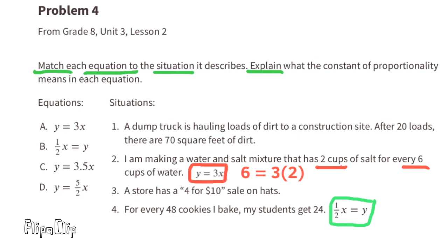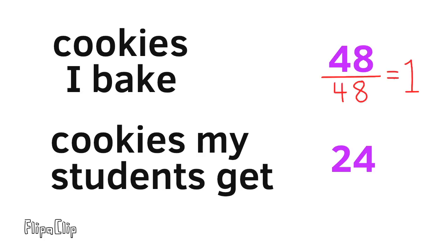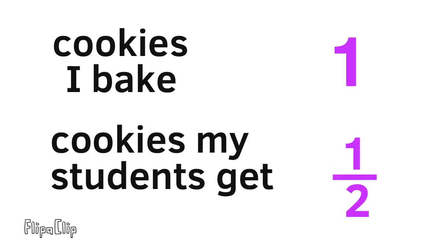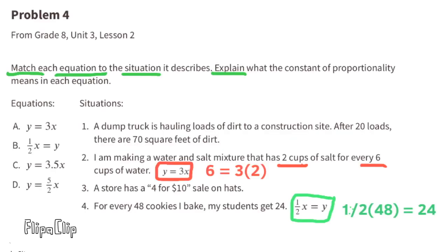Equation B matches situation 4: for every 48 cookies baked, students get 24. When 48 cookies are baked and students get 24, dividing 24 by 48 equals 1/2. So when only 1 cookie is baked, students get 1/2 — meaning for every cookie baked, students get half. If 48 cookies are baked, students get half of 48, which is 24 cookies.